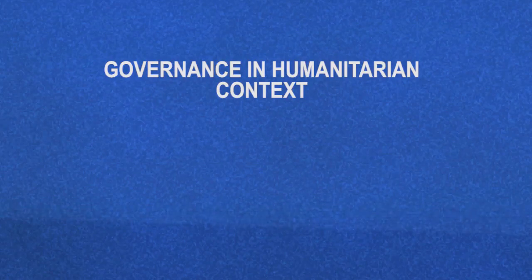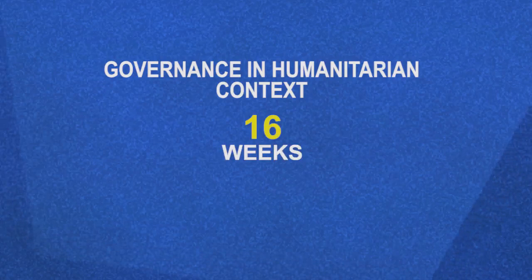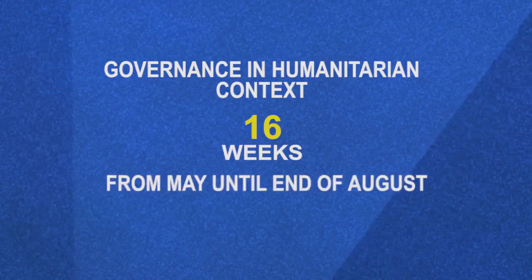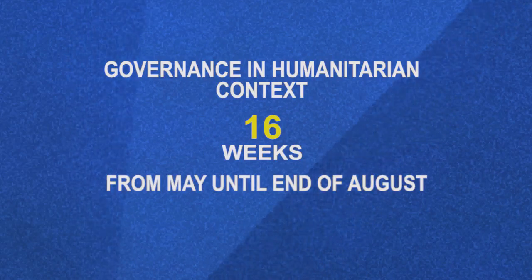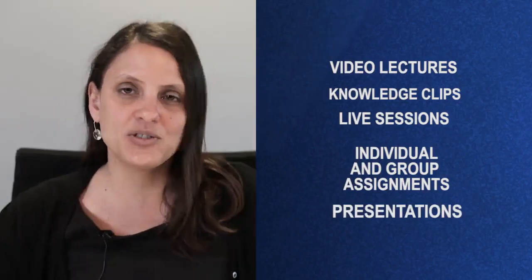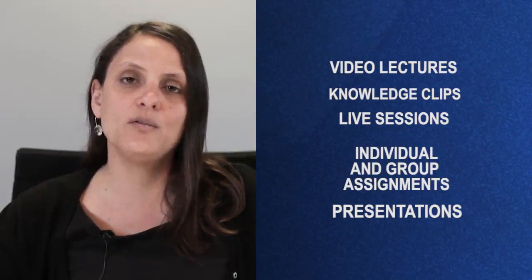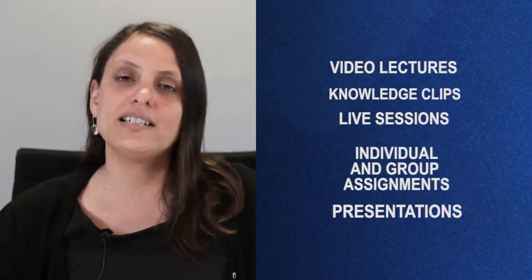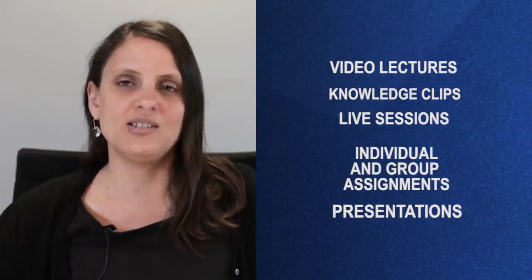Our Governance in Humanitarian Context Online course runs for 16 weeks — about four months — starting in May and going until the end of August. It includes a combination of learning and teaching activities, such as video lectures, knowledge clips, live sessions, individual assignments, group assignments, and presentations, where all of you will be meeting each other and discussing all these topics.